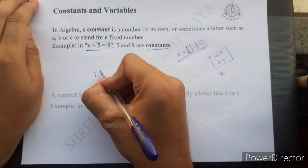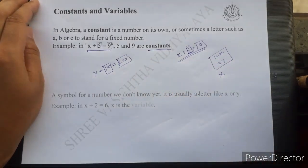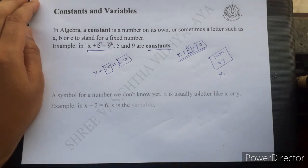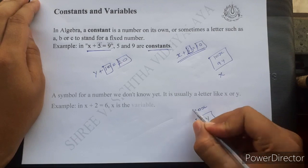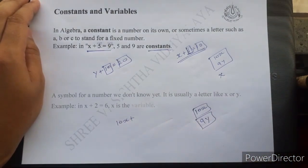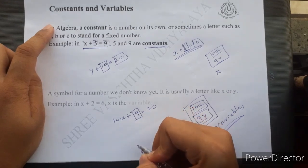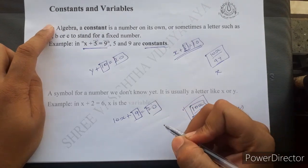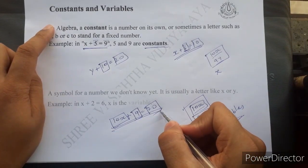In the equation x plus 6 equals 10, the 6 and 10 are constants. Similarly, in y plus 10 equals 20, the 10 and 20 are constants. Now, variables — whenever you see any alphabet or symbol with a number, those are variables. For example, 10x and 9y are variables. In the equation 10x plus 9 equals 20, the 9 and 20 are constants, but 10x is a variable. This is a linear equation with one variable.